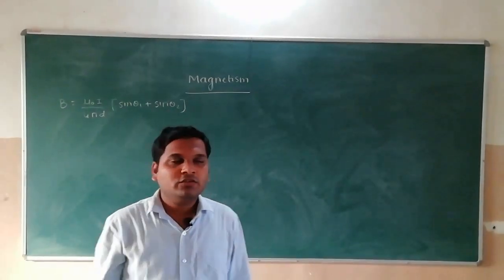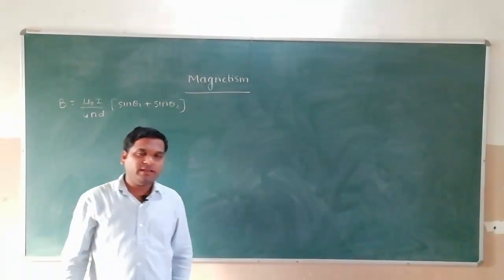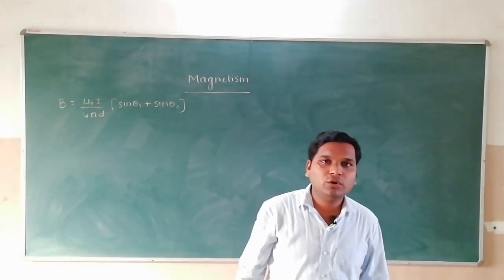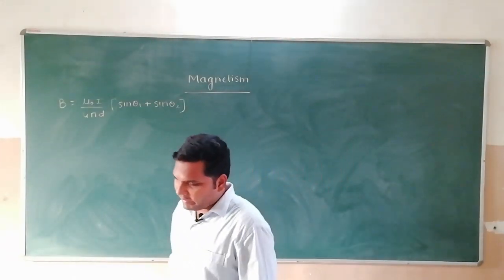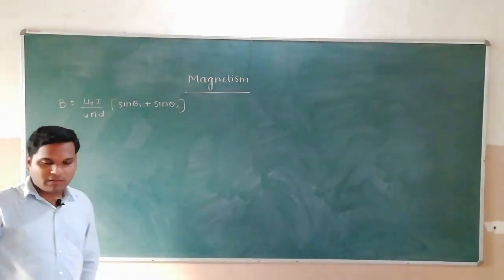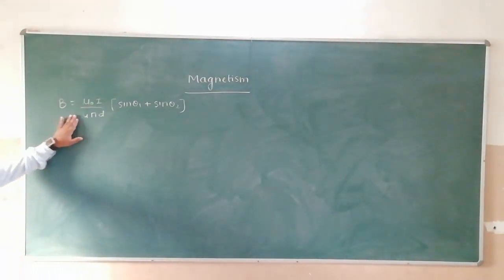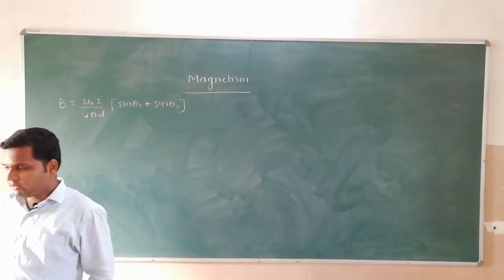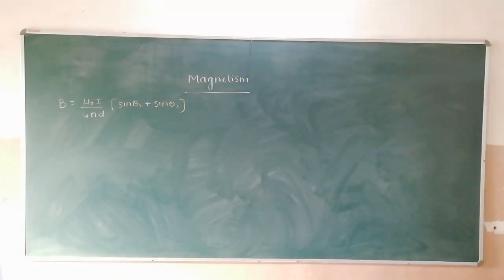Hello students, so in the last lecture we studied magnetic field at a point P due to a finite length wire and the formula we got: B is equal to mu not i upon 4 pi D sin theta 1 plus sin theta 2. We will solve one or two questions.